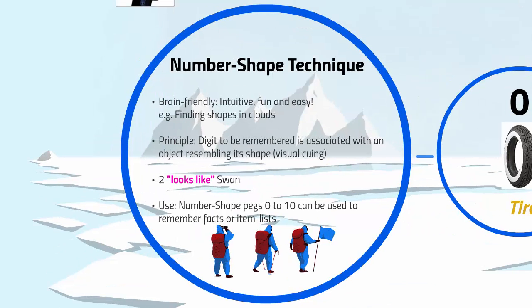Let me tell you a little bit more about this technique. The number shape is very intuitive for the brain and it is fun. Using it is like finding shapes in clouds, what we all have done when we were kids. The principle is that you associate the digits with things that they look like, and then you use this list of things as pegs for remembering facts or item lists.